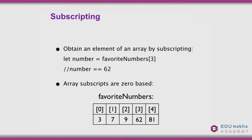We can obtain an element of an array by providing its index as a subscript. Here, let number = favoriteNumbers[3]. Looking at the favoriteNumbers array, the integer at index three is 62. Array subscripts are zero-based — favoriteNumbers[0] is three, favoriteNumbers[3] is 62, and so forth.